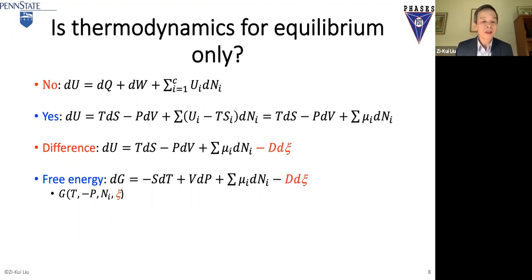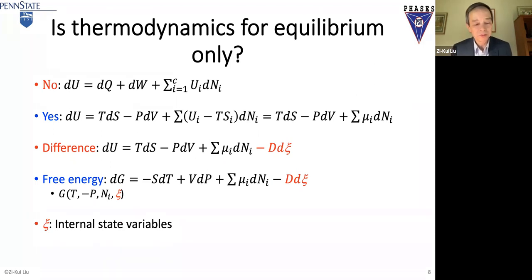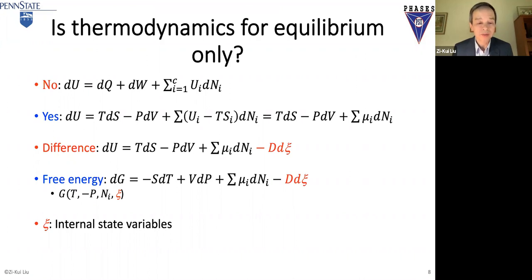So what is xi (psi)? Psi is the internal state variables — it defines the internal state. If the internal state is at equilibrium, then psi becomes a dependent variable, a function of temperature, pressure, and composition. If the system is not at equilibrium, then psi is an independent variable, or variables, because there could be many variables needed to describe the internal state.